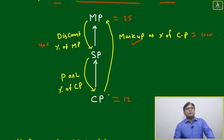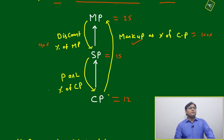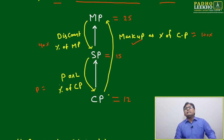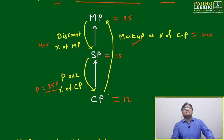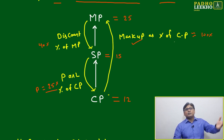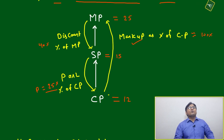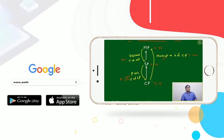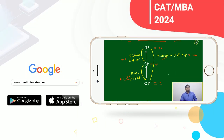A 40 percent discount means the price reduces by 10 rupees, so the selling price becomes 15 rupees. You still make a profit of 3 rupees — that is 3 out of 12, which is 1/4, meaning 25 percent profit. So the cost price jumps with a 100 percent markup, then a 40 percent discount brings it to the actual selling price of 15 rupees, and you make 25 percent profit which is 3 rupees.